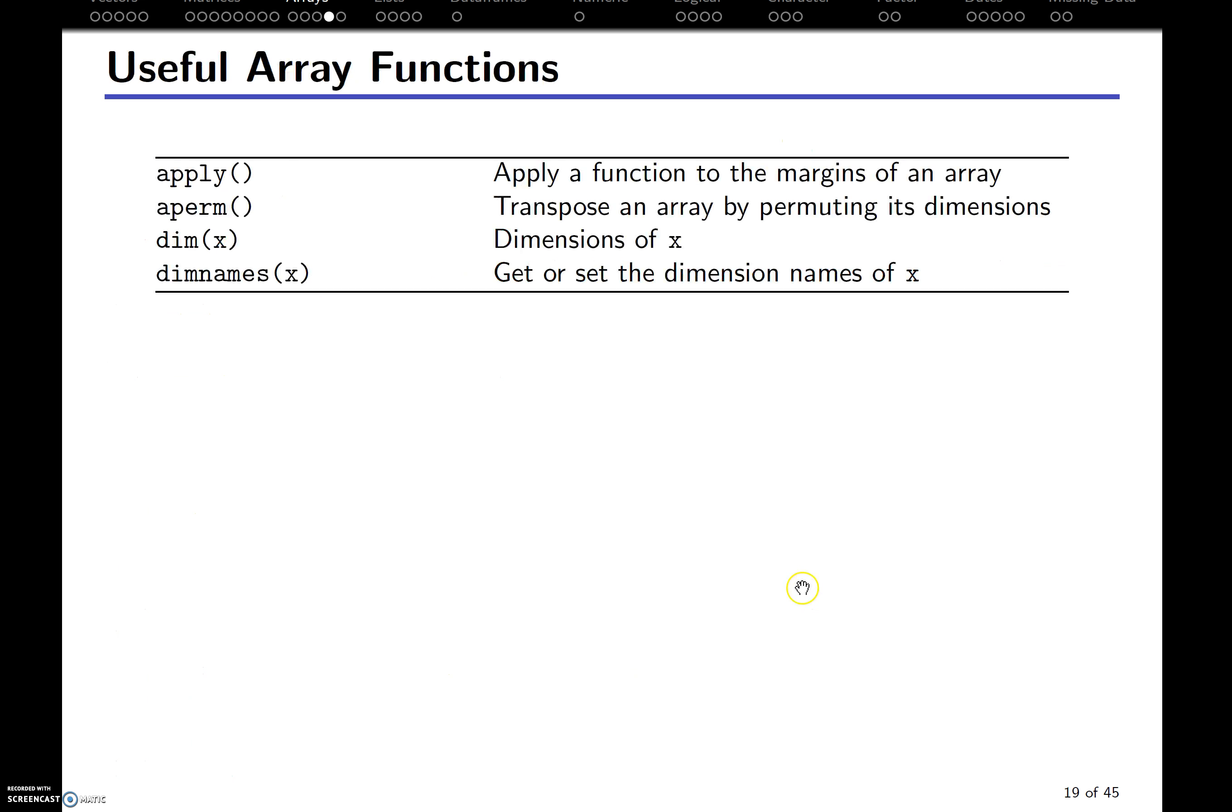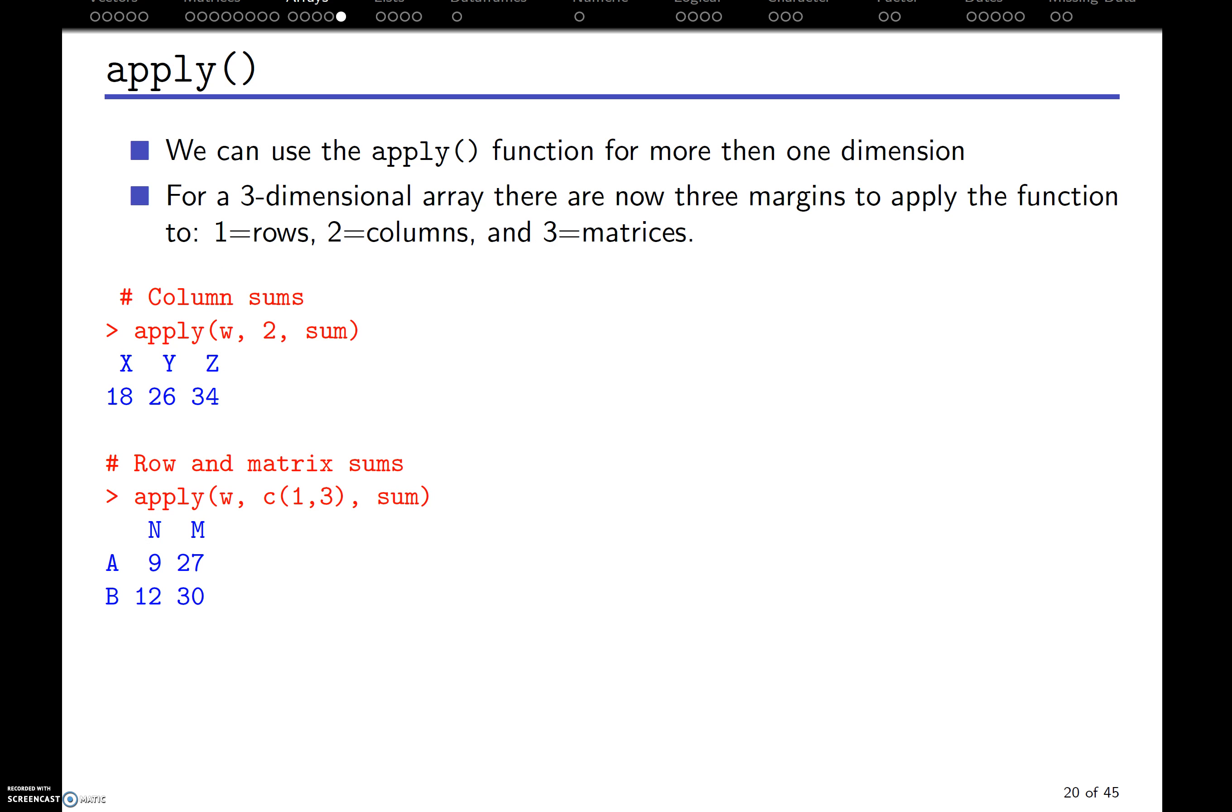Okay, again, with arrays, we can use apply. And apply will go across the different margins of your array. There's some other ones that are useful though too. We can transpose an array by permuting its dimensions. This just means reconfiguring how its dimensions are ordered. And so we might work out an example like that. We can obtain the dimensions of the array, which I often need reminding. So this is a very useful function. We can also get back its name, the dimension names, if need be.